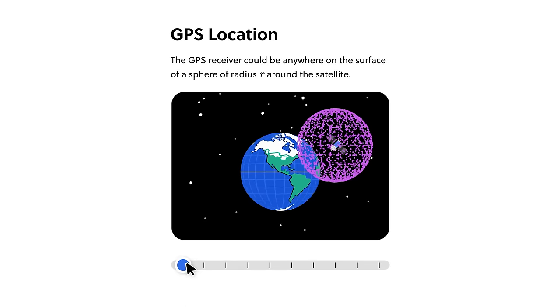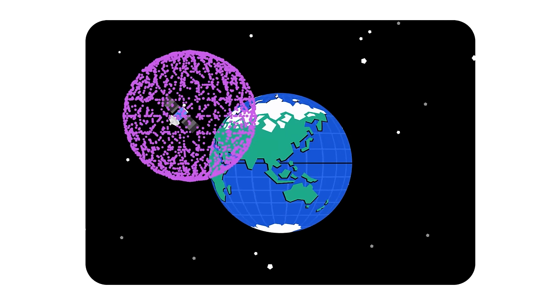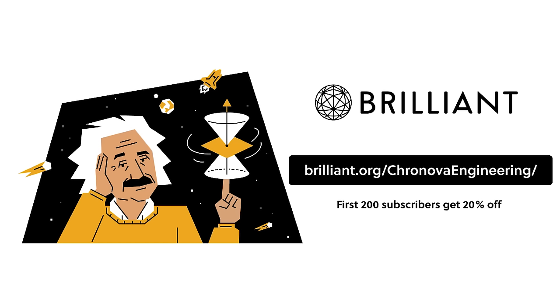To try everything Brilliant has to offer free for a full 30 days visit brilliant.org/cronova engineering or click on the link in the description. The first 200 viewers to sign up will get 20% off Brilliant's annual premium subscription. Thanks for watching.